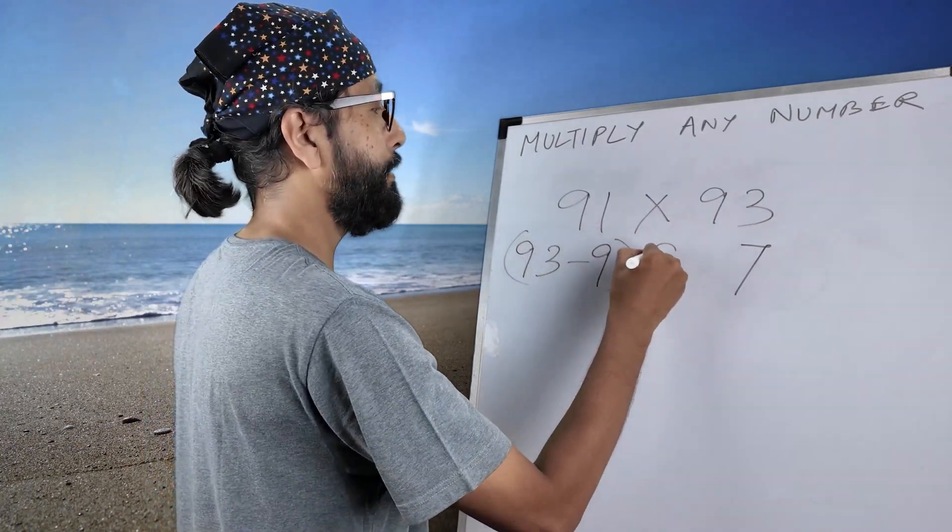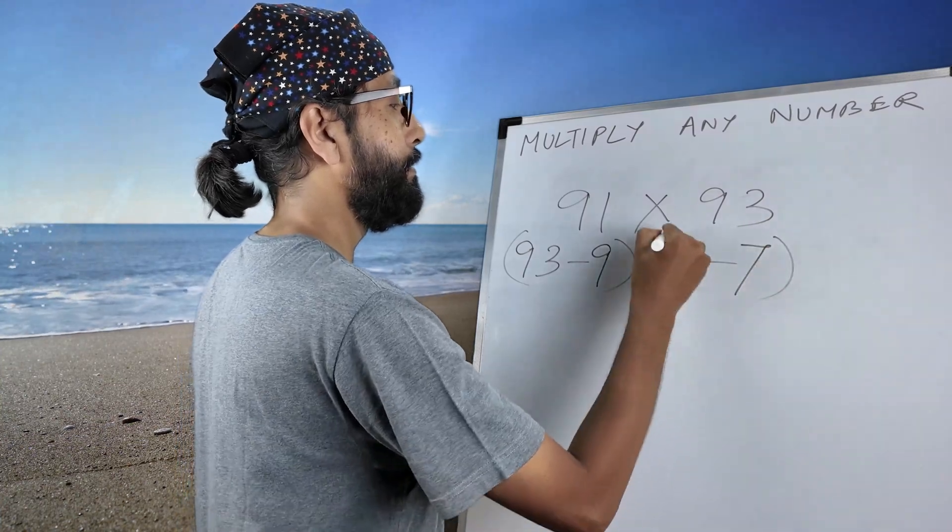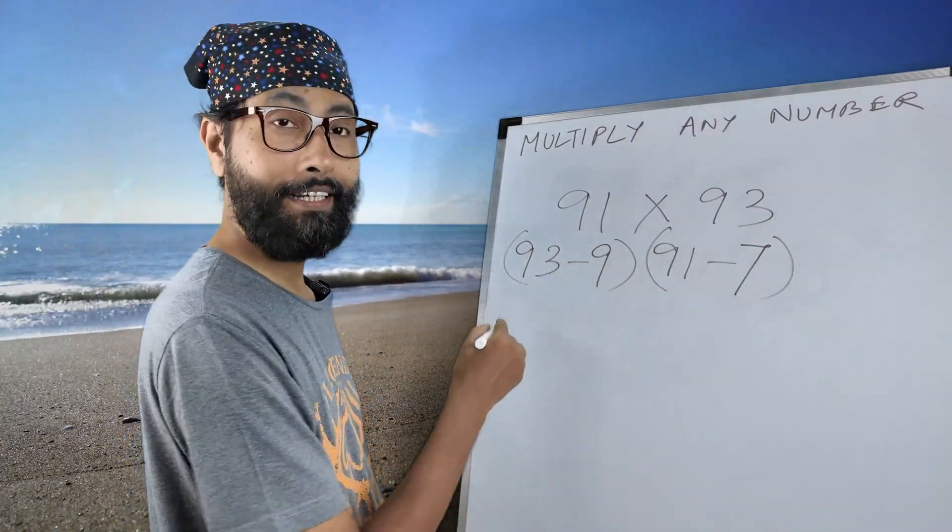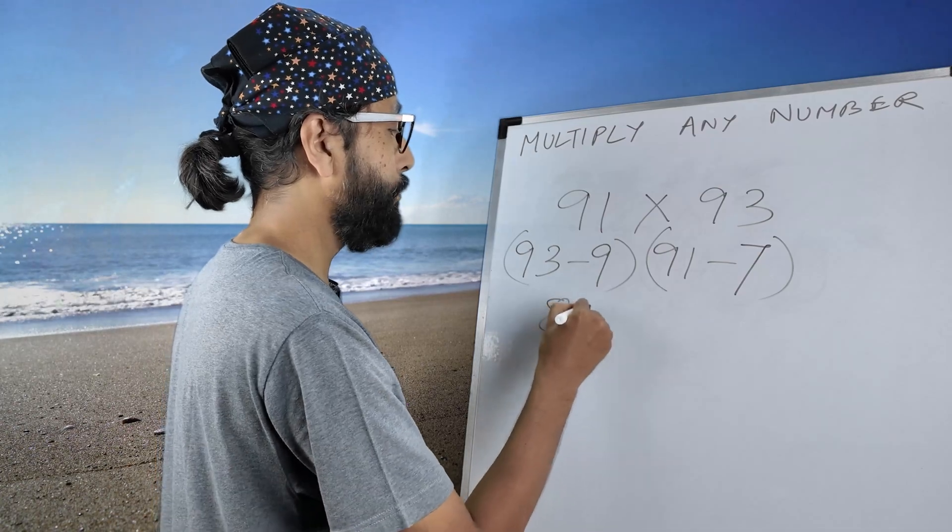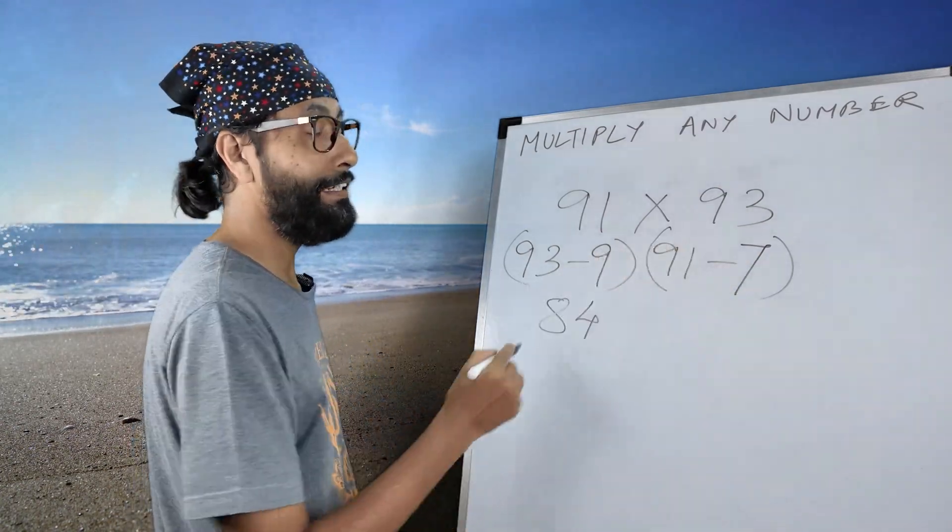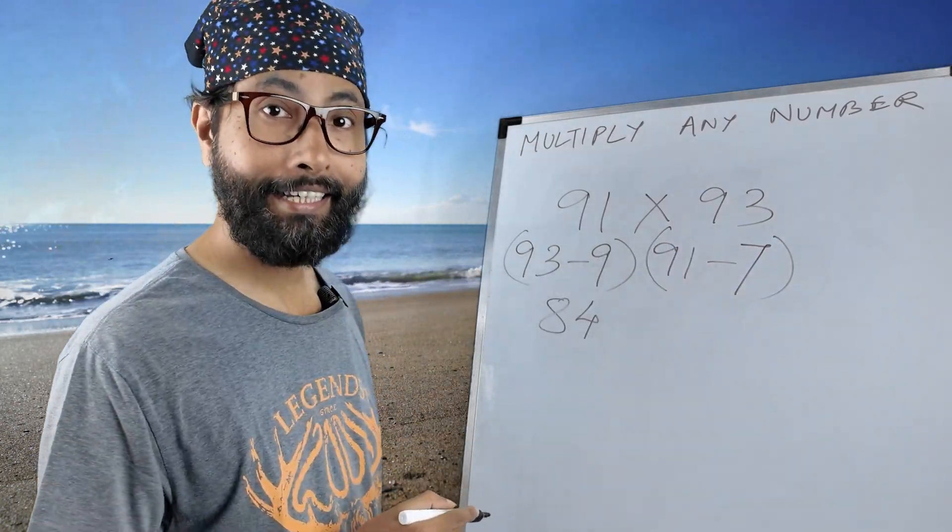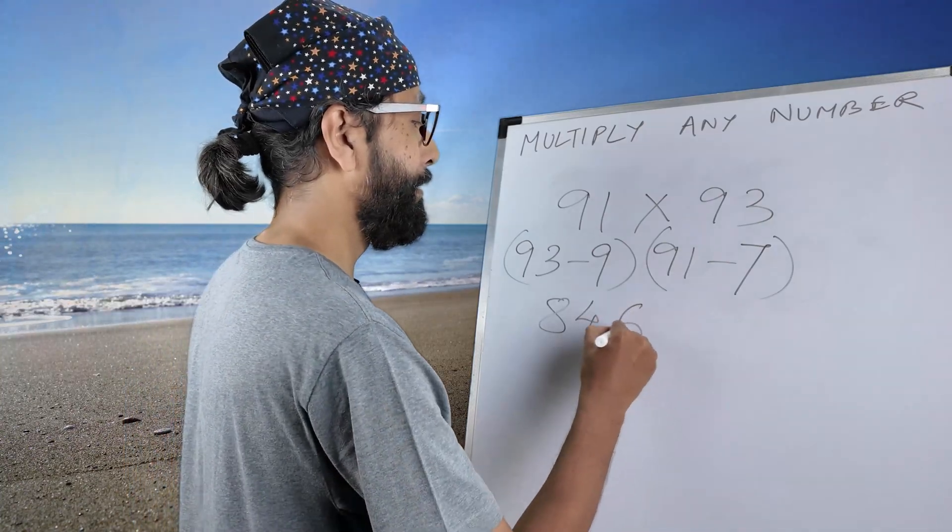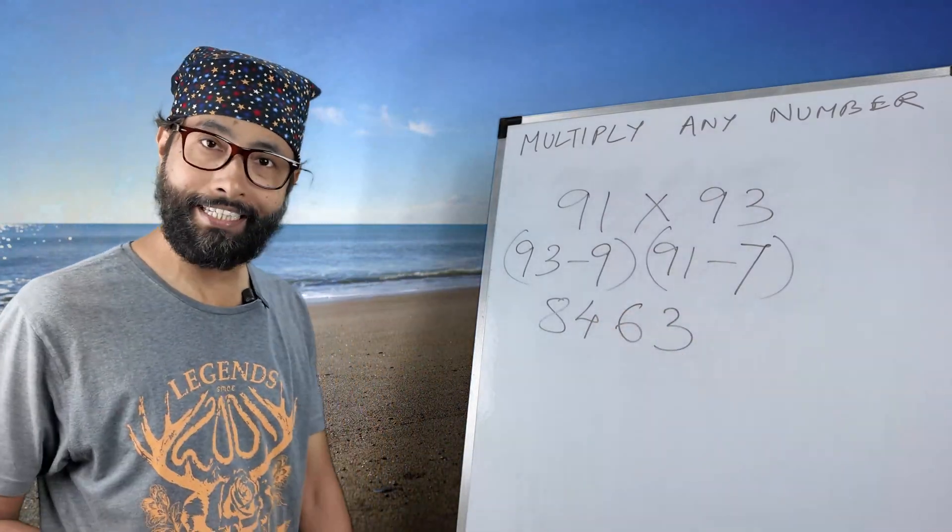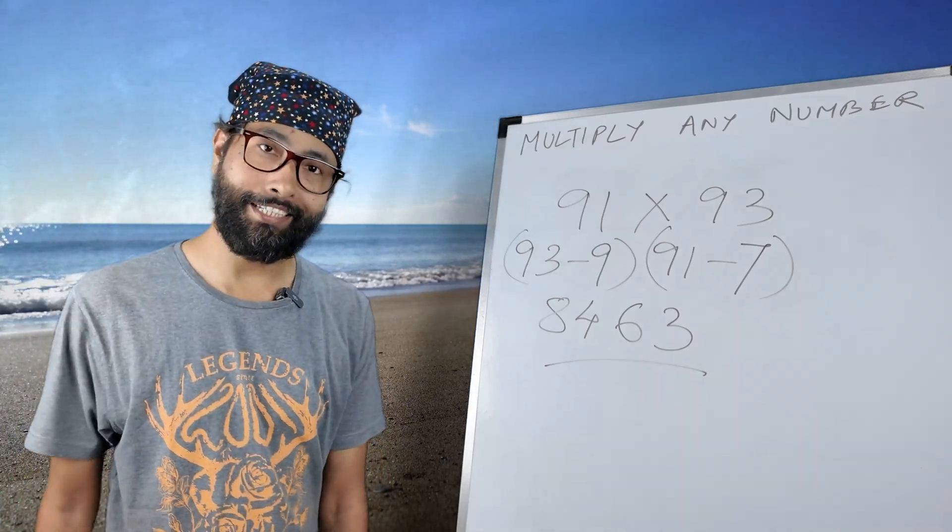And 91 will come here, right? Both the numbers will be how much? 84. And 7 multiplied by 9 is 63. So the final answer: 8463.